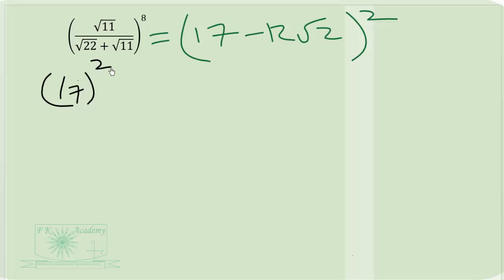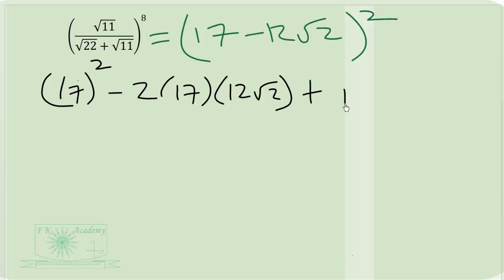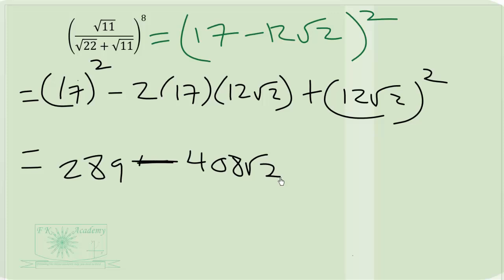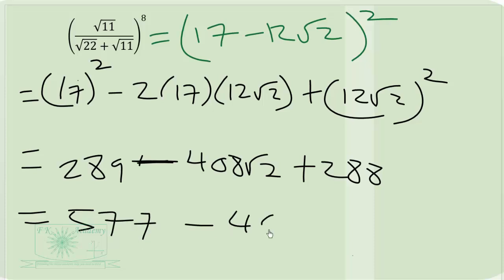Now we apply the perfect square identity one more time to (17 minus 12 root 2) squared. We get 17 squared minus 2 times 17 times 12 root 2 plus (12 root 2) squared. That is 289 minus 408 root 2 plus 144 times 2. So 289 plus 288 equals 577. The final answer is 577 minus 408 root 2.